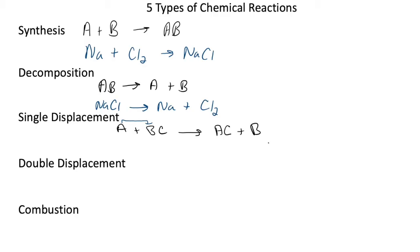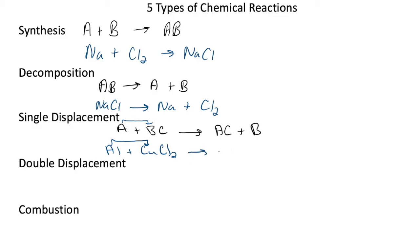leaving B as the single element. An example of this type of reaction is aluminum combining with copper chloride. In this case, the aluminum will displace the copper. The aluminum being a metal will displace the metal of copper and form aluminum chloride plus the displaced copper.